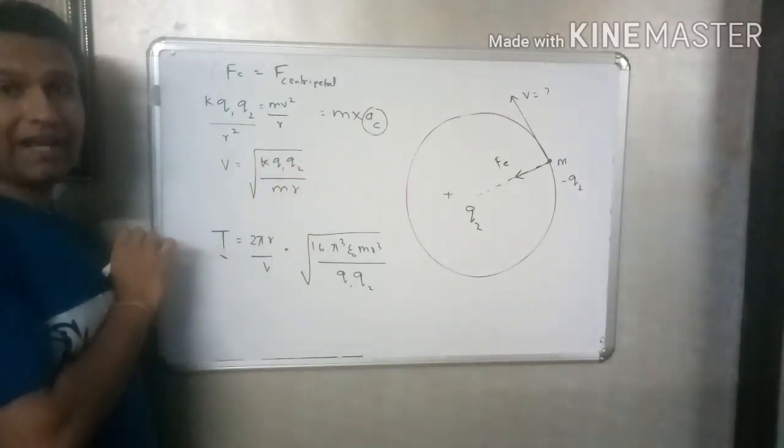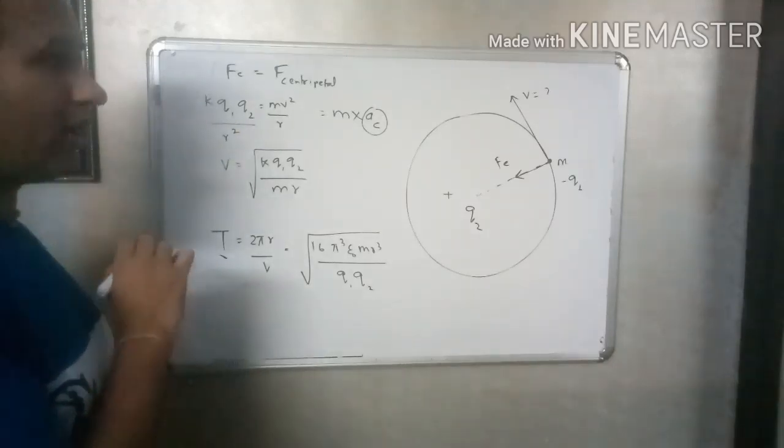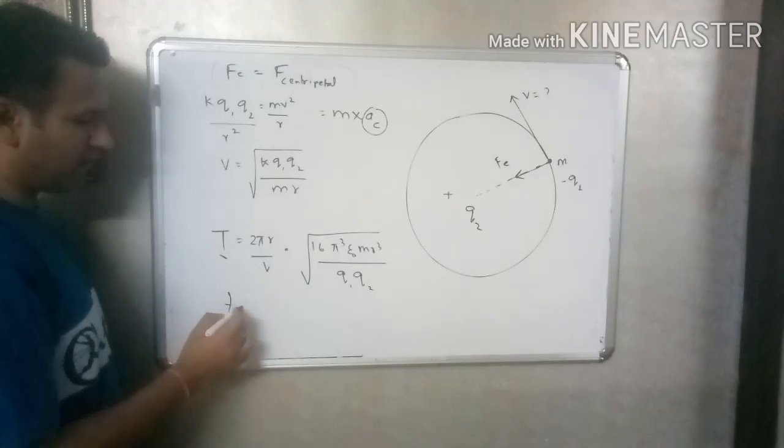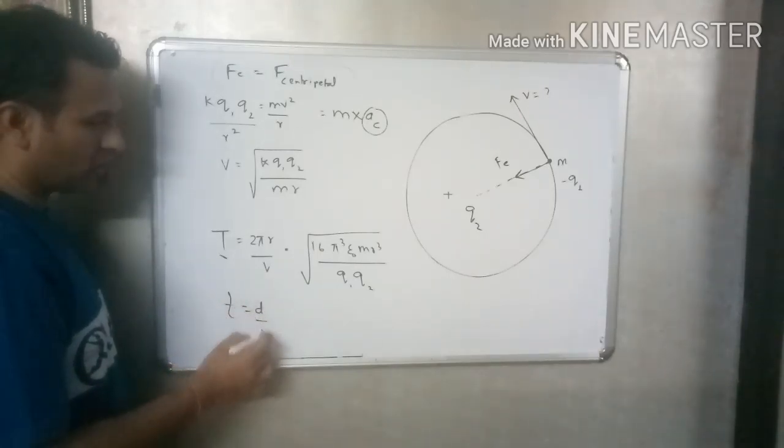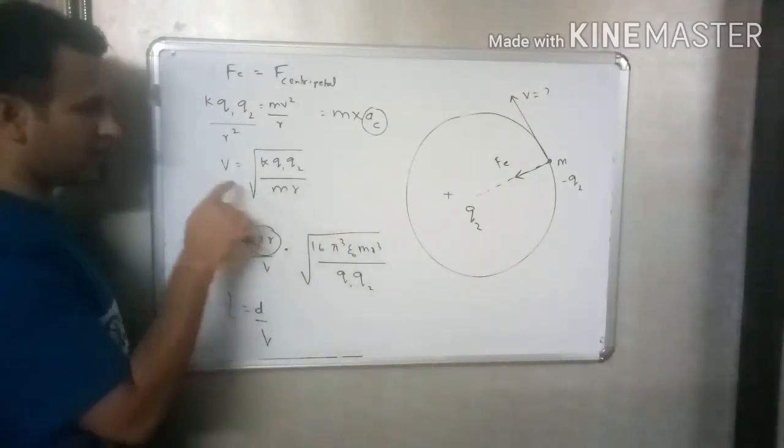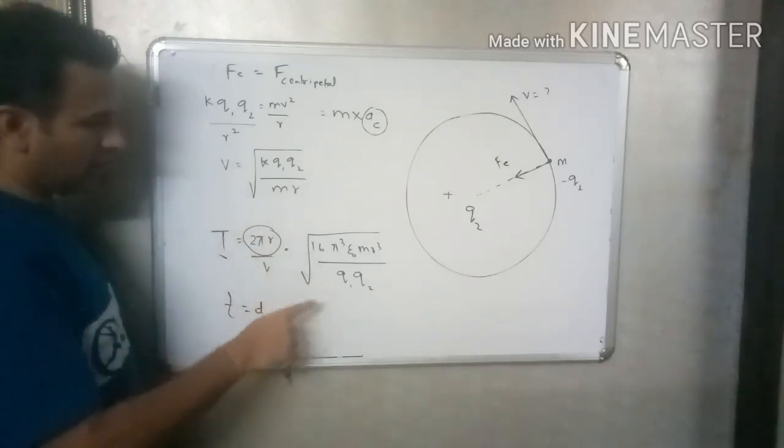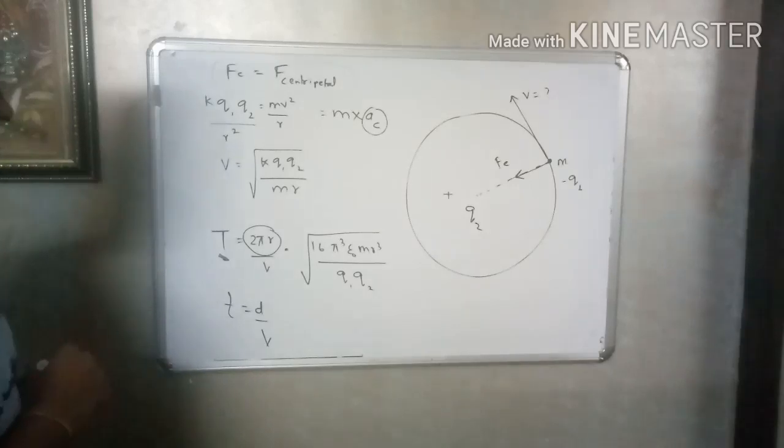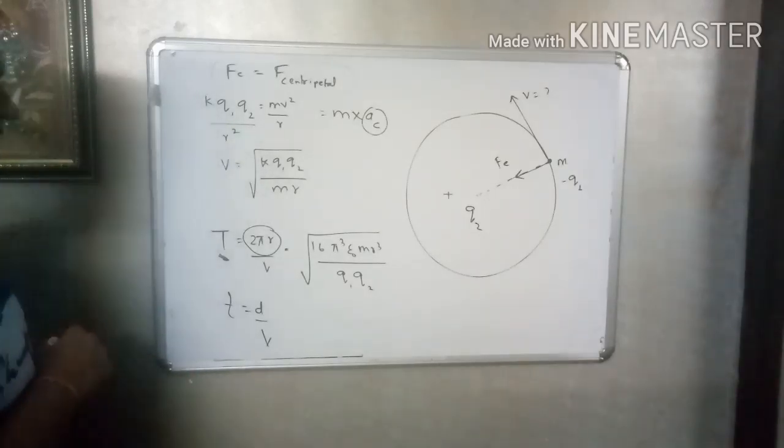Time period. Time is equal to distance by speed. Speed is equal to 2 pi r.